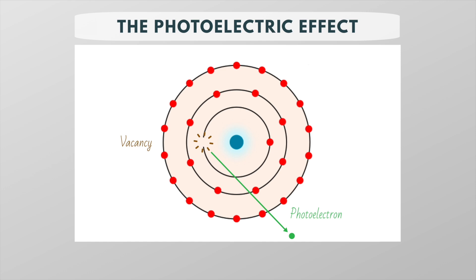To stabilize the atom, an outer shell electron fills the vacancy in the inner shell. Each electron shell has a different energy level, with those closest to the nucleus being lower in energy than those farther away from the nucleus.